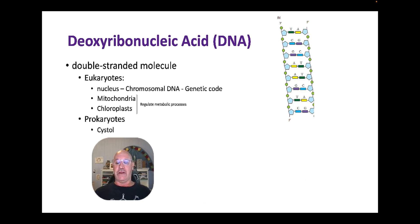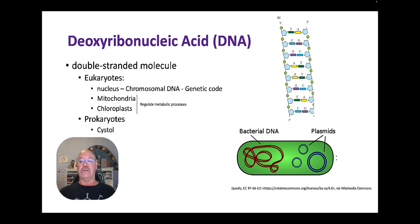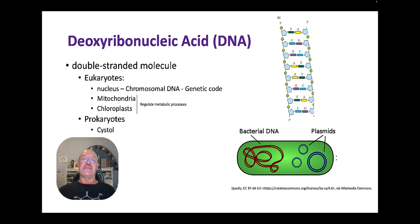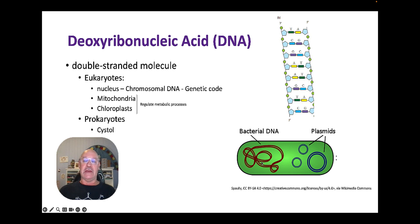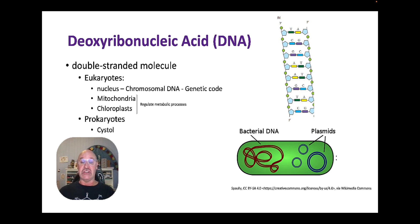In prokaryotes, DNA is found in the cytosol or cytoplasm. There are really two types of DNA in bacteria or prokaryotes: there's the chromosomal DNA, which is a single ring wound up in the cytoplasm, and there are also these smaller rings called plasmids, which we'll talk about when discussing genetic engineering.